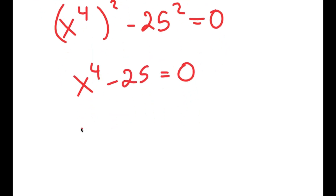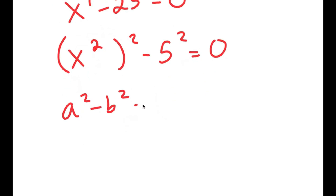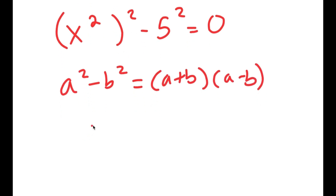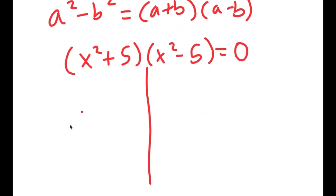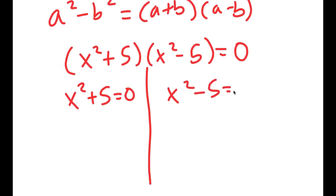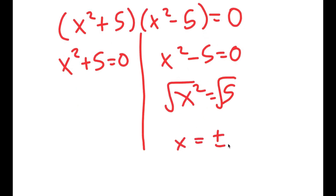From here, I'm going to rewrite this as (x²)² - 5² = 0. So now I can use the formula a² - b² = (a + b)(a - b) on this. This turns into (x² + 5)(x² - 5) = 0, giving me two equations: x² + 5 = 0 and x² - 5 = 0. For x² - 5 = 0, I get x² = 5, and taking the square root on both sides gives x = ±√5.